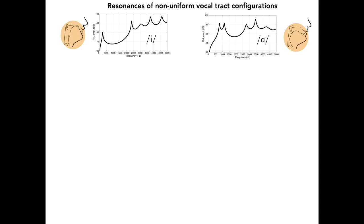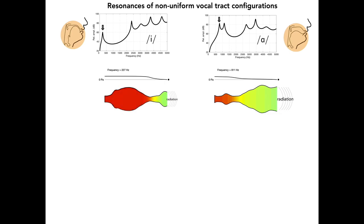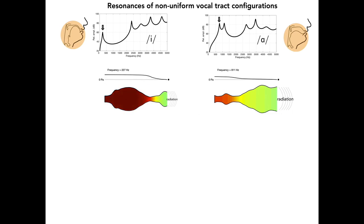Standing waves will now be demonstrated for the first three resonances of the vowels E and AH. The first resonance of this particular E vowel is 227 Hz. As can be seen, the standing wave associated with this frequency is similar to the standing wave observed for the first resonance of the uniform tube, which had a frequency of 500 Hz. That is, the pressure oscillates between large positive and large negative values in the back portion of the vocal tract and tapers to nearly but not quite zero at the lips. The difference is that the pressure variation along the vocal tract length is modified by the expansions and constrictions that form the E configuration.